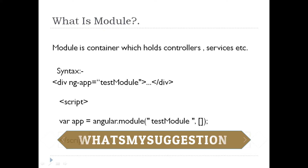I have defined one module. The name of the module is TestModule. I didn't define any controller, services, or anything inside it — just a simple module declaration. This particular module will be available from this particular div and till the end of that div. However many lines it spans, till the end of that div, the module will be applicable.